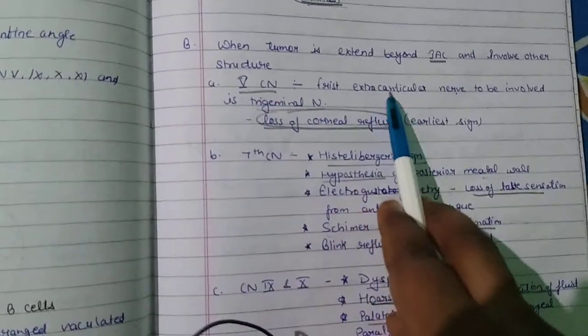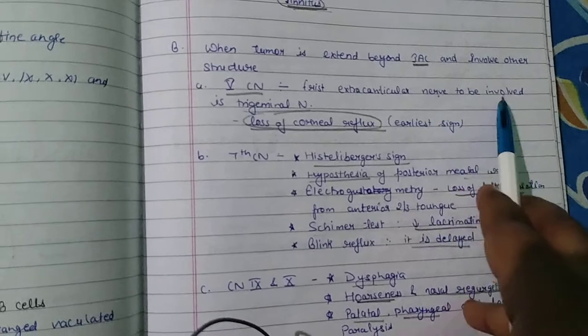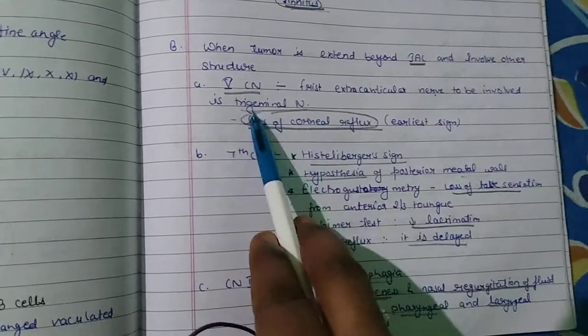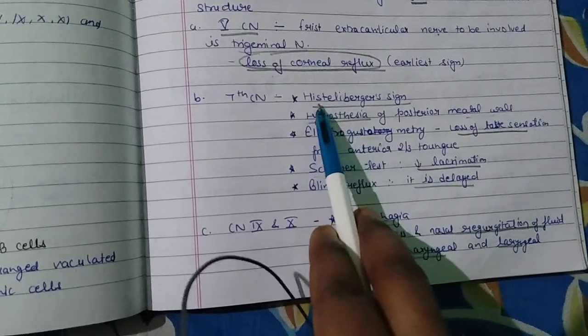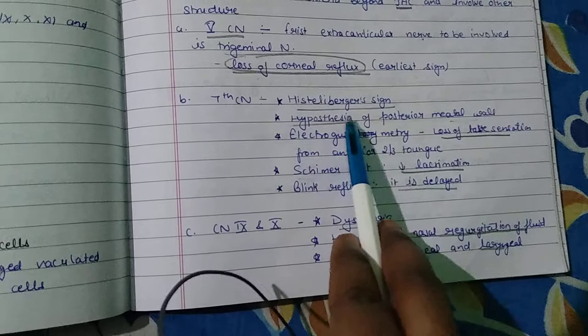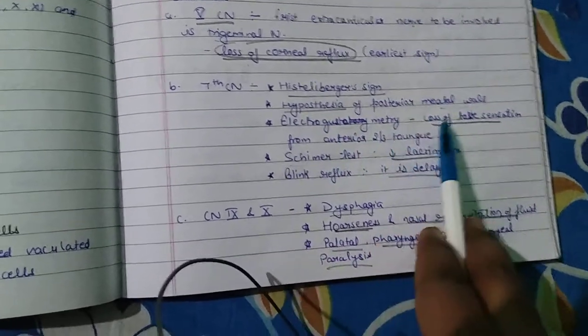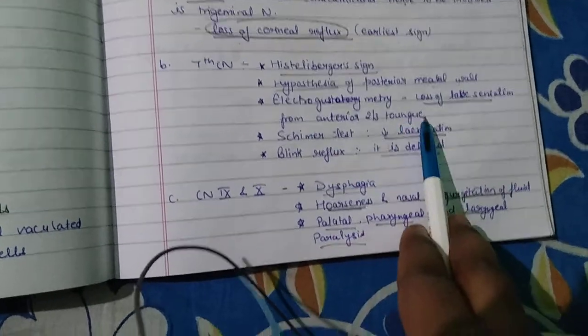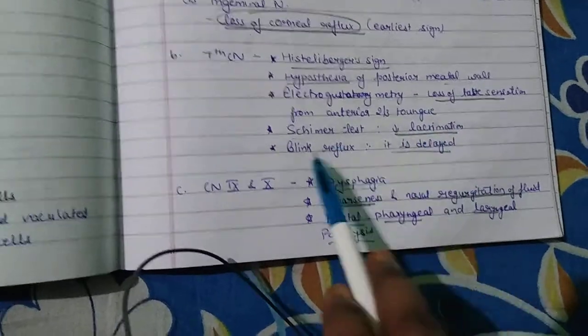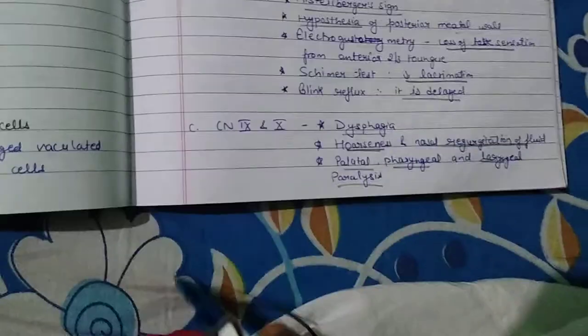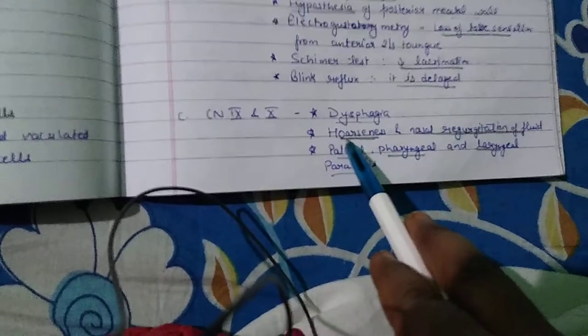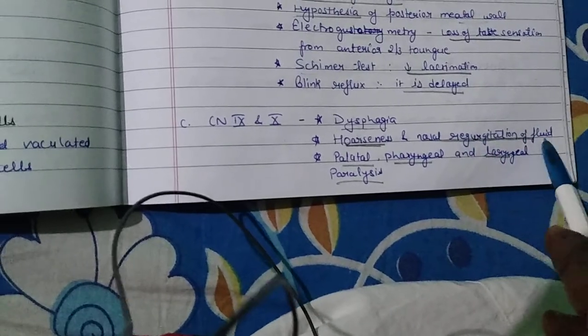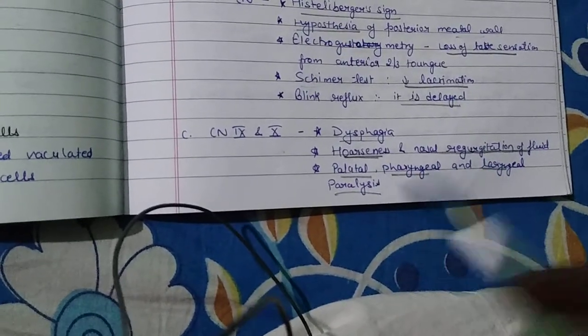If tumor extends beyond the internal acoustic canal: If 5th nerve involved, trigeminal nerve is first extracranial nerve affected with loss of corneal reflex - earliest sign. If 7th nerve involved: Hitselberger sign, hypoesthesia of posterior meatal wall, electrogustometry shows loss of taste from anterior two-thirds of tongue, Schirmer's test shows decreased lacrimation, blink reflex is delayed. If 9th and 10th nerve involved: hoarseness and nasal regurgitation of fluid, palatal, pharyngeal and laryngeal paralysis.